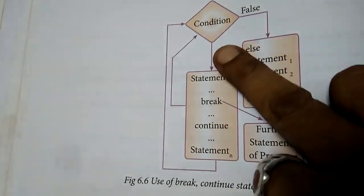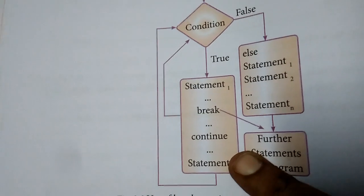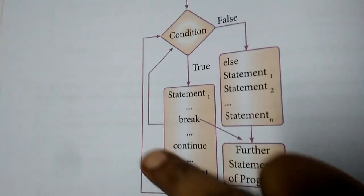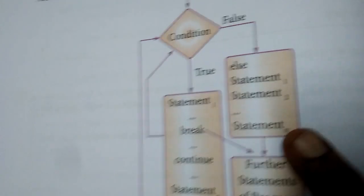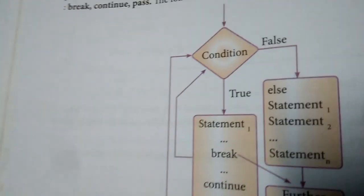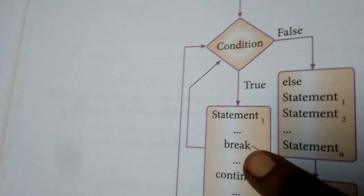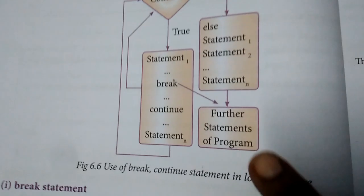Jump statement unconditionally transfers the control. When I say condition is true, it executes automatically. Unless the condition falls, the statement will be executed. This is the jump statement.